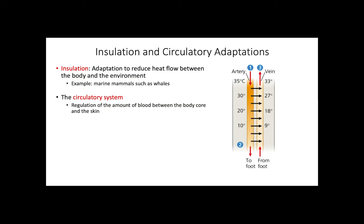The circulatory system also presents adaptations that help regulate the amount of blood between the body core and the skin. The first process is vasodilation — the widening of superficial blood vessels to release body heat to the environment, which lowers the body temperature. The second process is the opposite, known as vasoconstriction, where blood vessels narrow and blood flow is reduced, minimizing heat transfer and conserving heat.